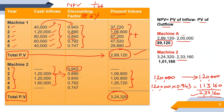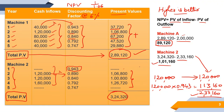So NPV of Machine 2 = 3,24,320 minus 2,33,160, and we get the answer 91,160. Now compare both machines: the NPV rule states that higher NPV is better. Machine 2 has the higher NPV, so the company should select Machine 2. Conclusion: since the NPV of Machine 2 is higher compared to Machine 1, Machine 2 should be selected.